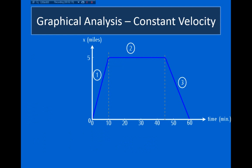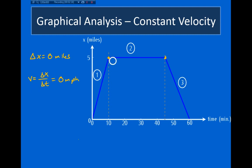For segment two, I start out at five miles and I end with the same y-value — I end at the same position, five miles. So delta x is zero miles; my y-value never changed. Velocity is delta x over delta t, so this is going to be zero miles per hour. Remember, velocity is equal to slope. Here I've got a horizontal line, so my slope was equal to zero.